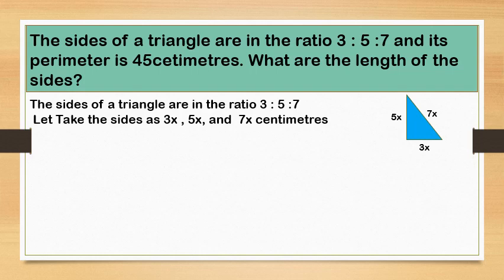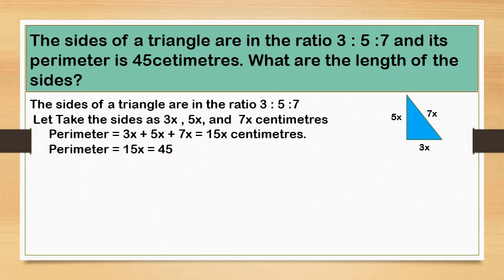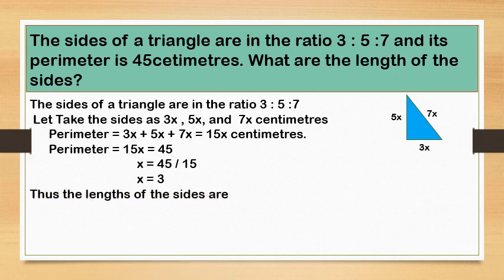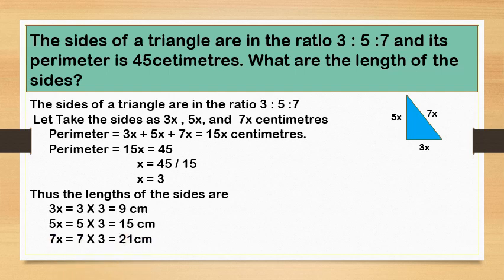And its perimeter is 45 centimeters. We know the perimeter is the sum of three sides of a triangle, that is perimeter equal to 3X plus 5X plus 7X equal to 15X centimeters. So we can write perimeter equal to 15X which is equal to 45 centimeters. From there, X equal to 45 by 15, we get X equal to 3. Thus, the length of the sides are: substitute X equal to 3, we get 3X equal to 9 centimeters, 5X equal to 15 centimeters and 7X equal to 21 centimeters.